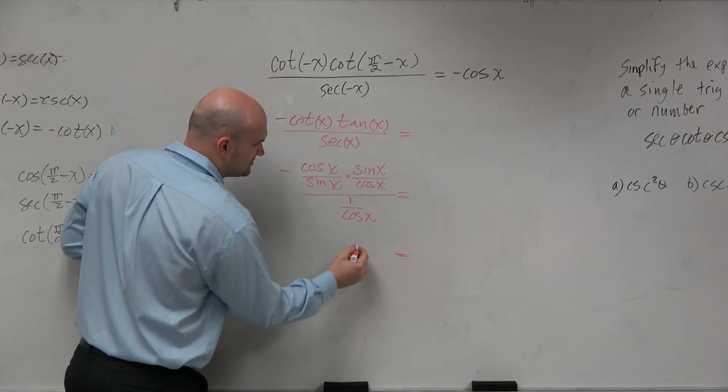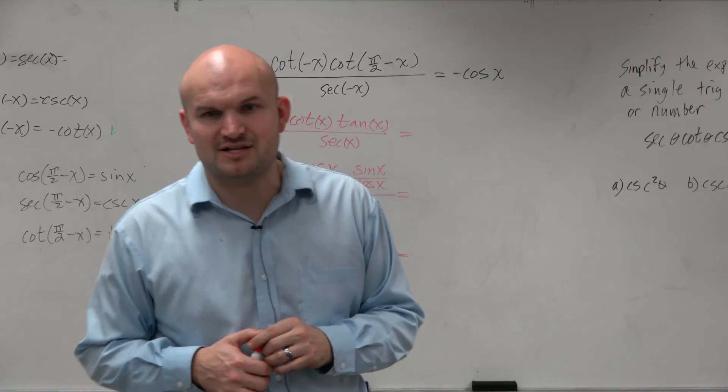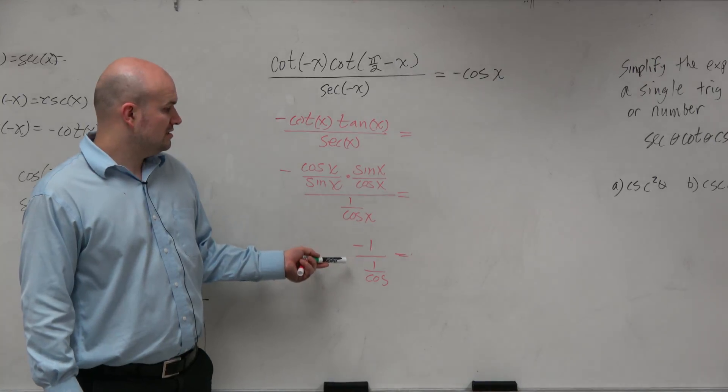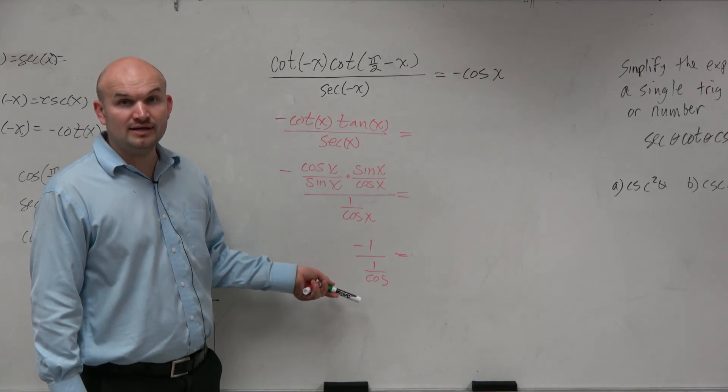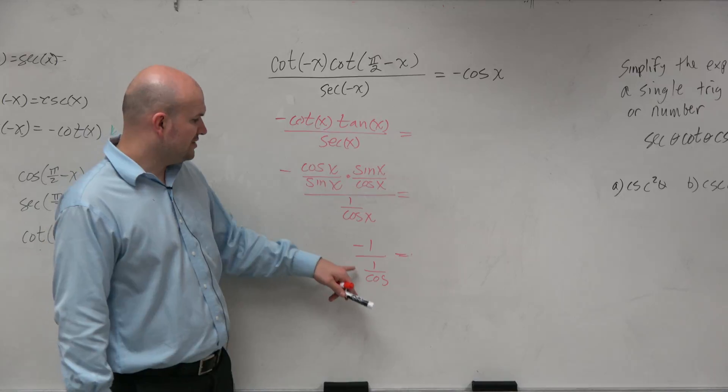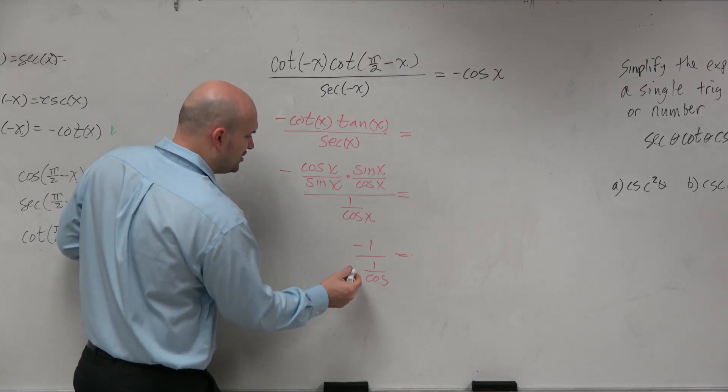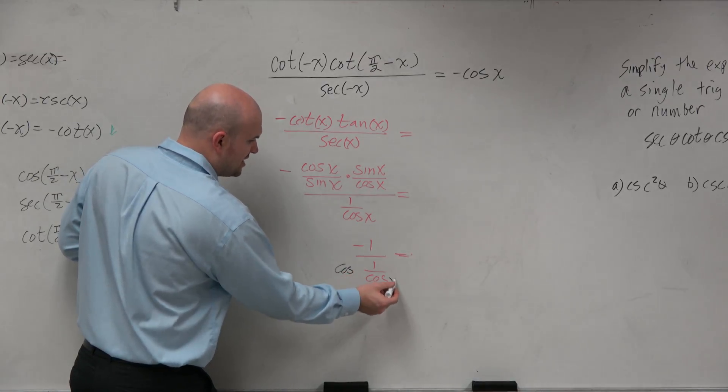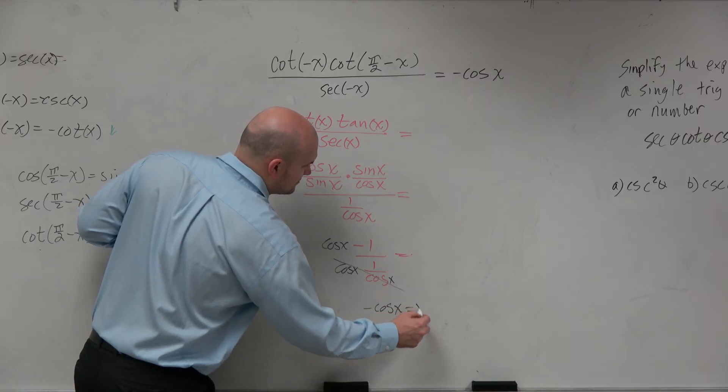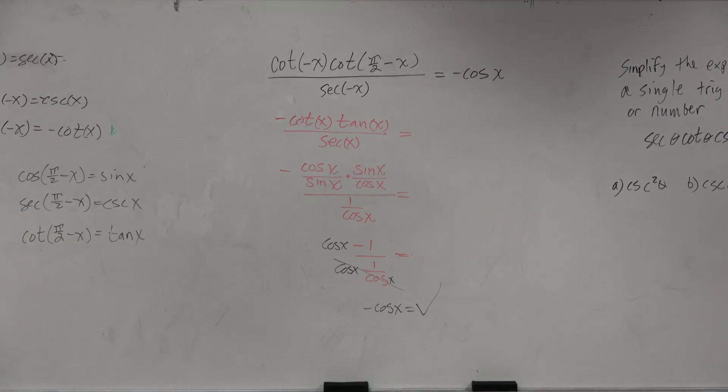Now, this can equal negative 1 over 1 over cosine. If you have a number divided by a fraction, the easy way to get rid of dividing by a fraction is to multiply by the reciprocal. You could think of the reciprocal as secant, or as cosine over 1. So if you multiply by cosine of x on both sides, you get negative cosine of x. Now you have verified the identity. But was this an easy one? This was easy.